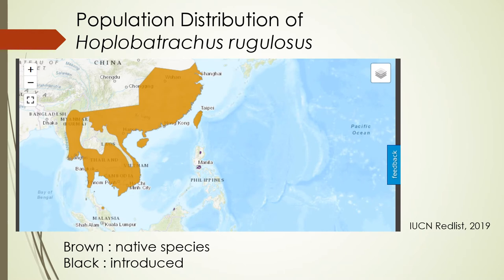In this slide we can see the population distribution of Hoplobatrachus rugulosus. It is native to China, Laos, Vietnam, Cambodia, Myanmar, and Thailand, and it is an introduced species in Manila, Philippines, and Malaysia.